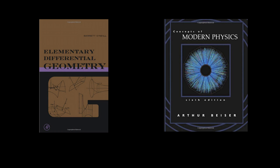Elementary Differential Geometry by Barrett O'Neill was the textbook I used at San Diego State University. It is well written and covers the foundations in geometry needed for a deeper understanding of general relativity. Another good college textbook is Concepts of Modern Physics by Arthur Breeser.